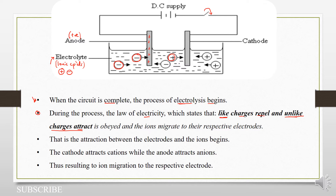So these negatively charged ions in our solution or our electrolyte will be pulled towards this anode because it is positively charged. That's why we are saying that unlike charges attract — the negative charges are moving towards the positive electrode.